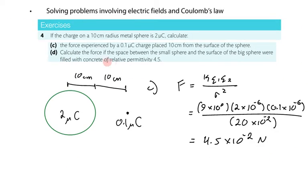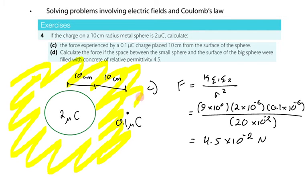For part D, it says calculate the force if the space between the sphere and the charged particle was concrete. So it's not free space. This whole area is now concrete. We're going to have to deal with the permittivity of concrete, which is 4.5 times higher than the permittivity of free space.